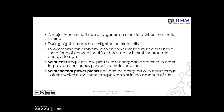A major weakness of solar technology is that it can only generate electricity when the sun is shining — during night time there is no sunlight, so no electricity. To overcome this problem, a solar power station must either have some form of conventional fuel backup or incorporate energy storage such as batteries. Solar cells are frequently coupled with rechargeable batteries to provide continuous power in remote locations. Solar thermal power plants can also be designed with heat storage systems to supply power in the absence of the sun.